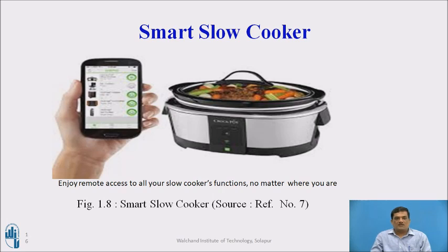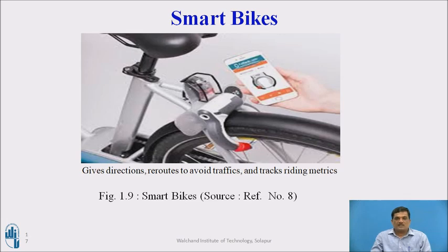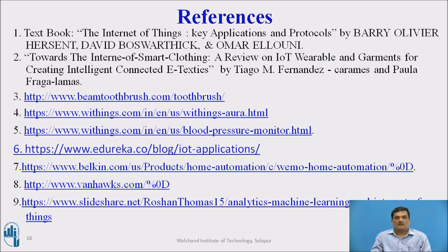The next application is the smart slow cooker. Nowadays, women are equally busy as men and may not have sufficient time to stand in the kitchen to check the readiness of food. While cooking, they may go shopping, pick up children from school, or watch TV — but with this IoT-enabled cooker, they can monitor food readiness no matter where they are. Smart bikes give directions, suggest roads to avoid traffic, and track riding metrics, allowing riders to reroute based on traffic information from mobile applications. These are the references cited to prepare this presentation. Thank you.